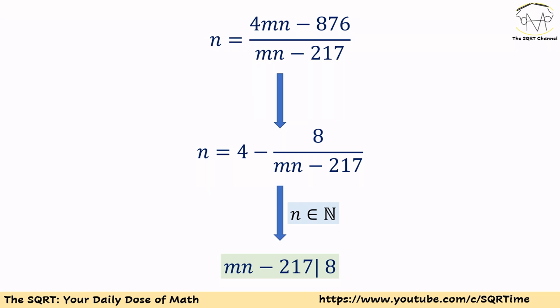Remember n was a natural number, so the left hand side is a natural number and the right hand side should be a natural number too. Obviously 4 is a natural number, so we need to have a natural number for 8/(mn - 217).